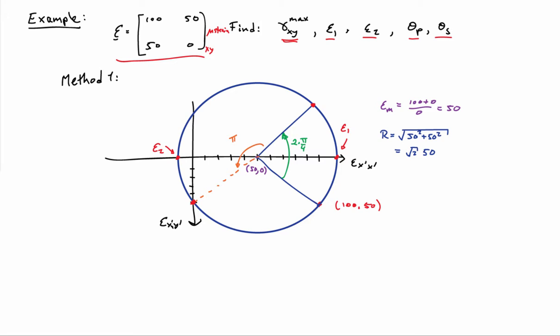And I can immediately identify what the principal strains are, epsilon 1 and epsilon 2. Those are just the intercepts of the Mohr circle strain this time with respect to the horizontal axis. And so I can read off these values from the geometry quite easily since I know what the radius of the circle is.